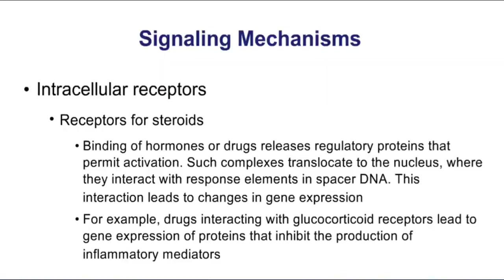The next thing we're going to review are various signaling mechanisms. It's a good opportunity to bridge the biochemistry that you've learned with the pharmacology as we think about the different types of receptors in those signaling pathways. We start with intracellular receptors, including receptors for steroids. Steroids can diffuse across the cell membrane, bind to their intracellular receptor, and that drug-receptor complex goes to the nucleus and stimulates gene expression. When you think about steroids binding to intracellular receptors, this is a gene expression pathway.